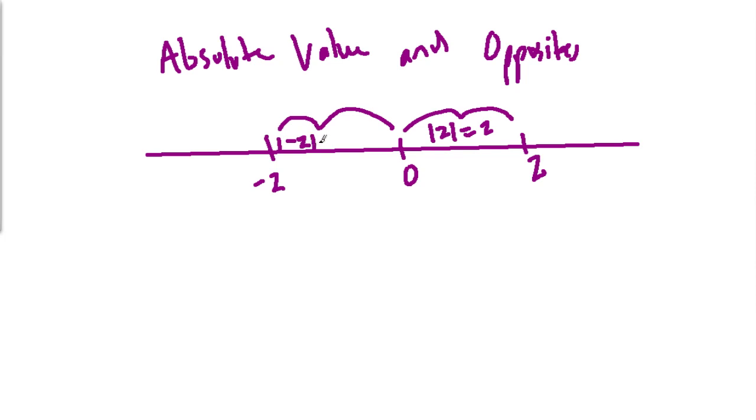So, the absolute value of 2 is 2. The absolute value of negative 2 is the same because we're still going 2 units, just in the negative direction. So, the absolute value of negative 2 is still 2.